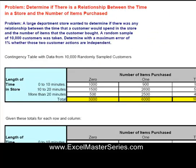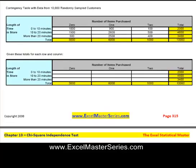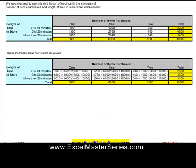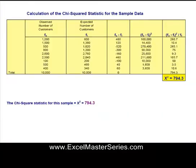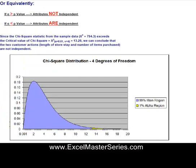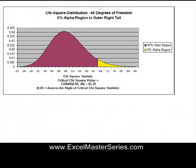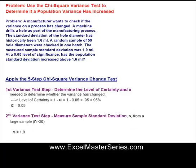Here's the chi-squared independence test. We're walking through how to set that up in Excel — it's not very complicated once you see how to do it. Each worked-out problem is shown with lots of screenshots and a detailed but simple explanation, along with a graph at the end. Here's the five-step chi-square variance change test.